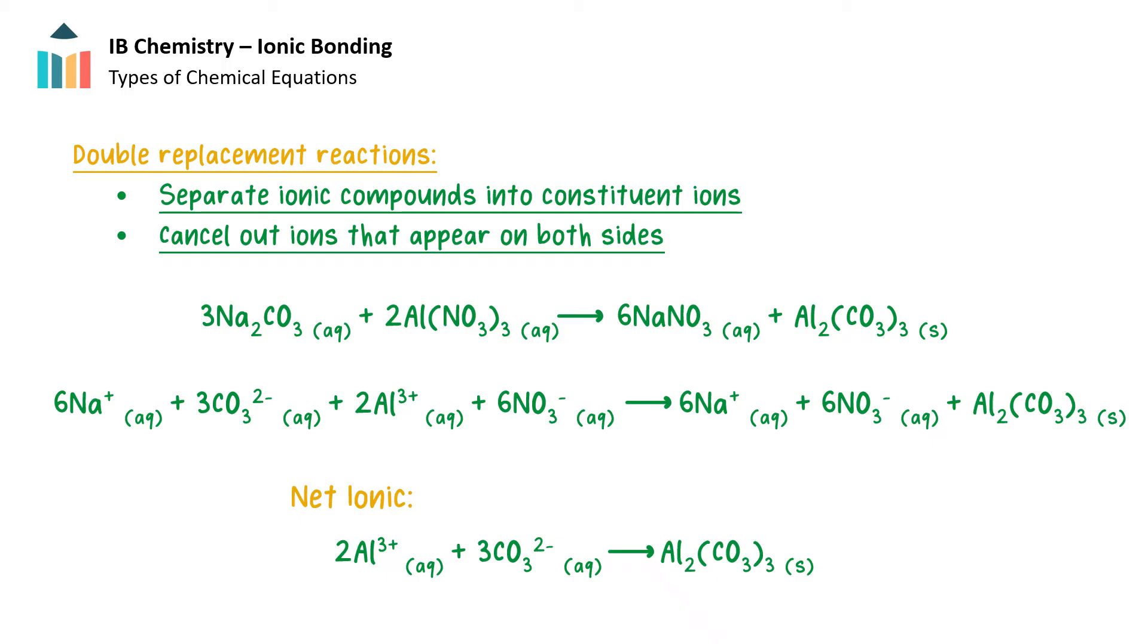Any aqueous ions that are not part of the formation of the precipitate are called spectator ions and are eliminated from the net ionic equation.